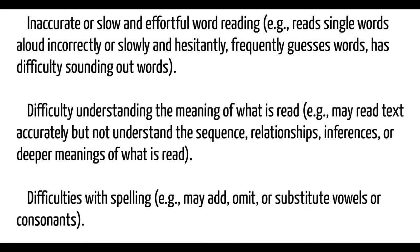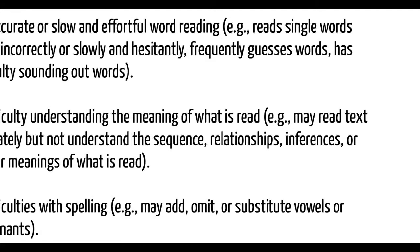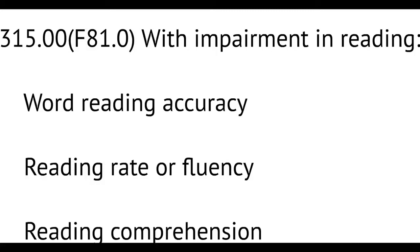The next one is difficulty understanding the meaning of what is read — that's comprehension. They may read text accurately but not understand what's going on: the sequence of events, relationships, inferences, or deeper meaning. So one area is the mechanics of reading — do they read very slowly or have trouble with comprehension. The individual might have both, or might have impairment in just one area.